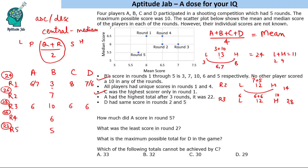We're told A had the highest total after 3 rounds, which was 22. We know A scored 6 in Round 3. So A's scores in Rounds 1 and 2 must sum to 16. From Round 1, A scored 6 or 7. If A scored 7 in Round 1, then A needs 9 in Round 2 — giving 7 + 9 + 6 = 22. This works and confirms A's Round 2 score is 9, and the highest in Round 2 is 9.